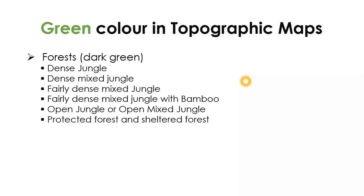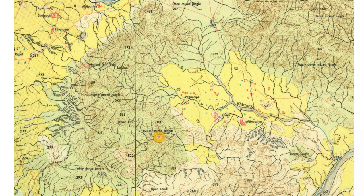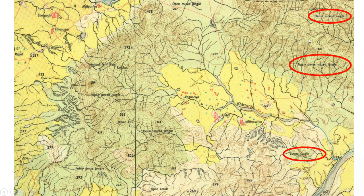Other than these classifications, forests are also categorized as protected forests, sheltered forests, or reserved forests — areas protected by law where the public does not have access. These are also shown in the green colored area. Other than forests, grasslands, orchards, and scattered trees are also shown in green. In this map, most of the areas are green, and within the green you can see names like 'fairly dense mixed jungle' identifying the type of vegetation in that area.